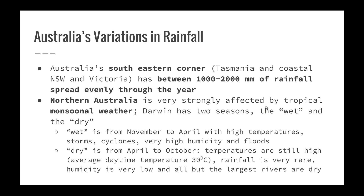What about variation in rainfall, which leads to variation in water availability? Australia's southeastern corner — Tasmania, coastal New South Wales and Victoria — has between 1,000 to 2,000 millimetres of rainfall spread evenly throughout the year, though this has fluctuated more than normal due to drought conditions.